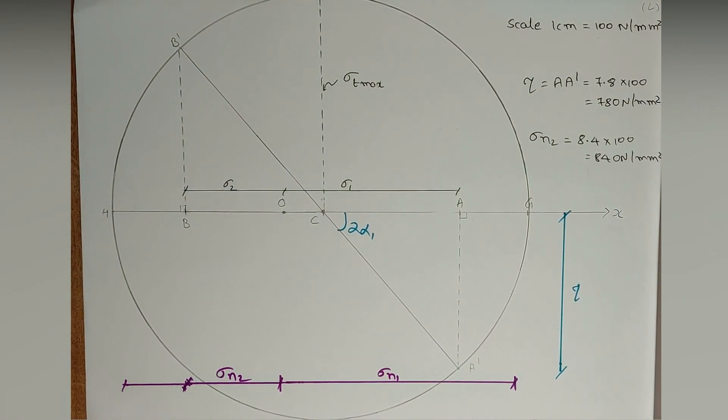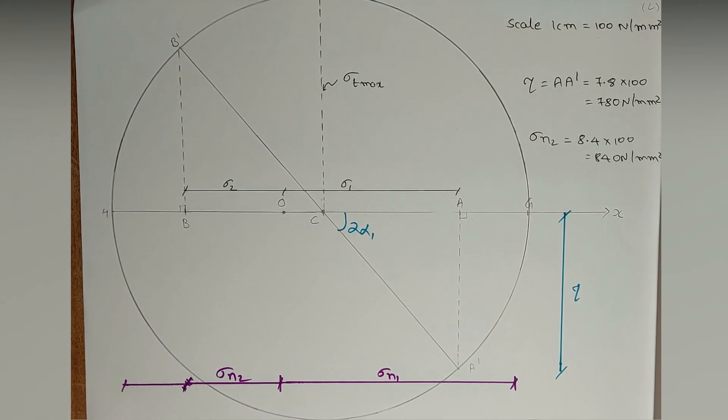So friends, this was all about the second case of Mohr circles method. This was the 12th part. That is all for today — thank you for watching.